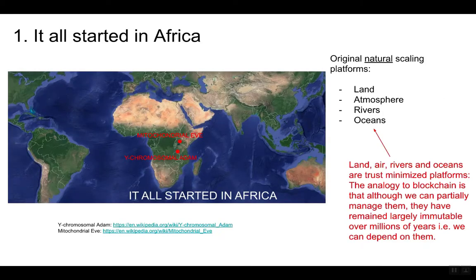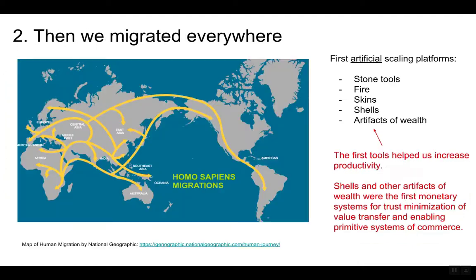It all started in Africa. Land, air, rivers, and oceans are trust-minimized platforms. The analogy to blockchain is that although we can partially manage them, they have remained largely immutable over millions of years — in other words, we can depend on them. Then we migrated everywhere. The first tools helped us increase productivity. Shells and other artifacts of wealth were the first monetary systems for trust minimization of value transfer and enabling primitive systems of commerce.